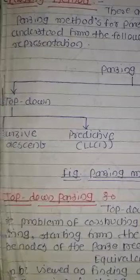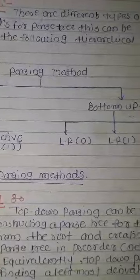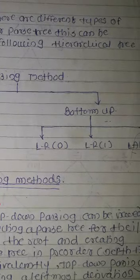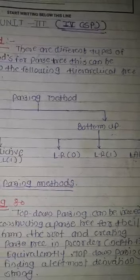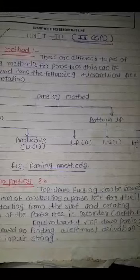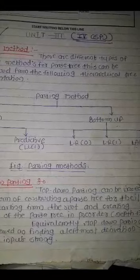There are two techniques or types available in top-down parsing: recursive descent and predictive parser — also called LL(1). Next is bottom-up parsing.